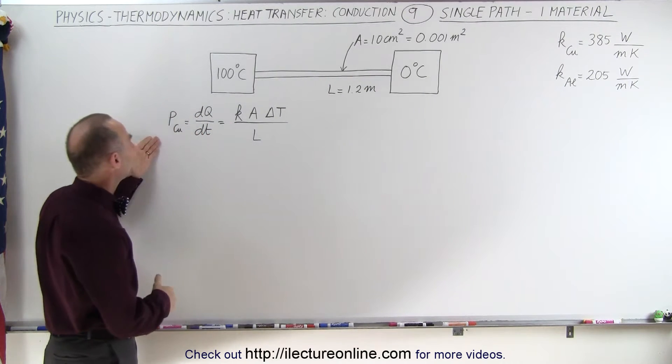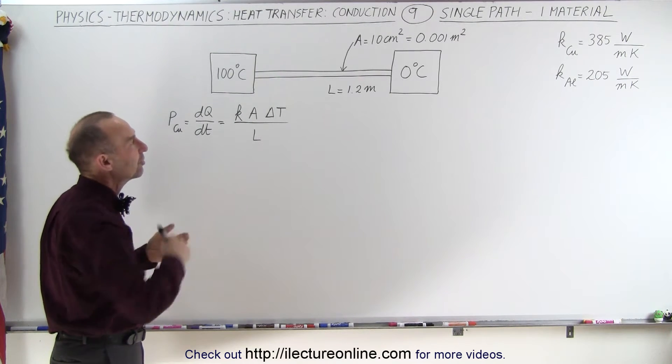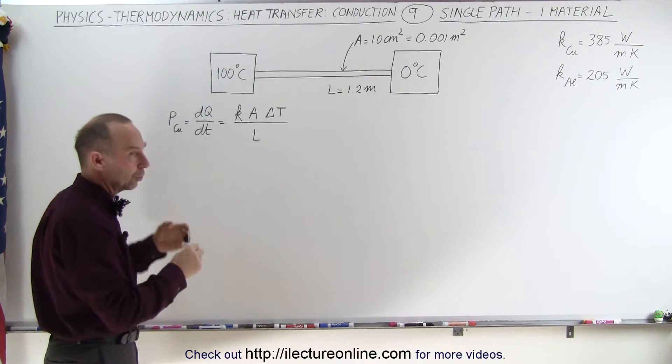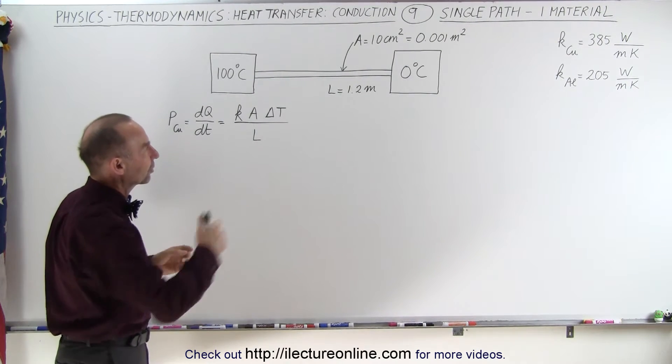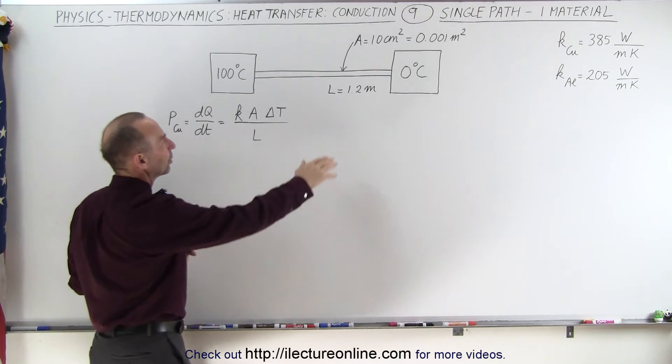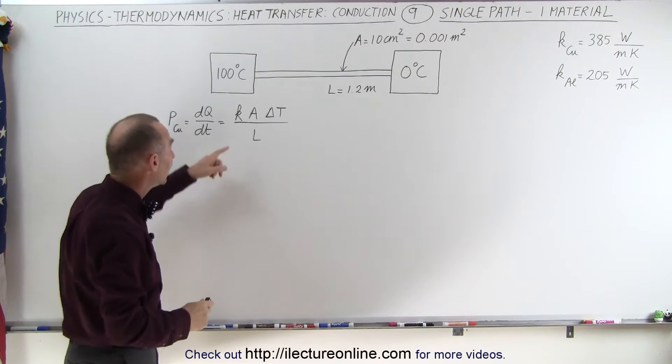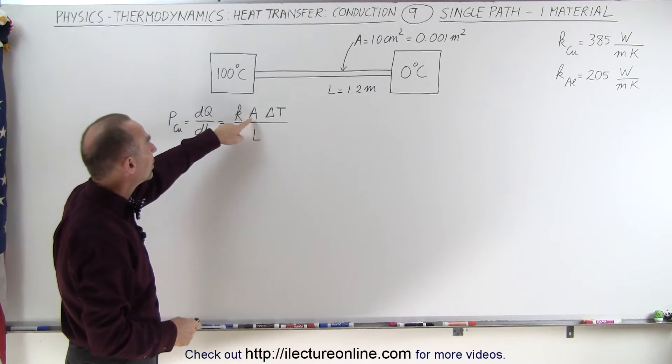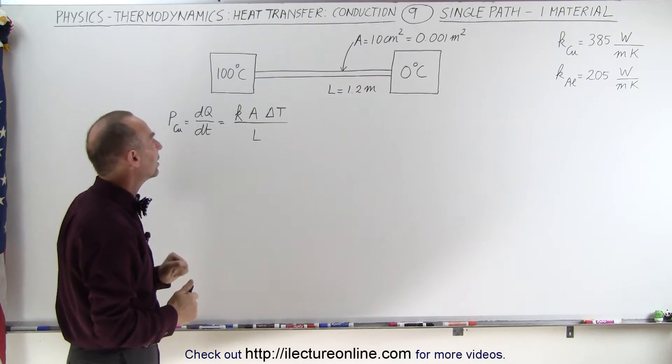Here's the equation that we need in order to calculate the amount of heat transferring per unit time. That's the power, or the dQ/dt, the amount of heat per unit time being transferred across the bar. Again, assuming also that the bar is a length of 1.2 meters. What we need is we need the heat conductivity, we need the cross-sectional area, we need the difference in the temperature, and we need the length.